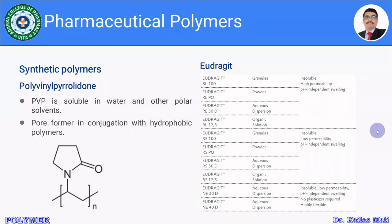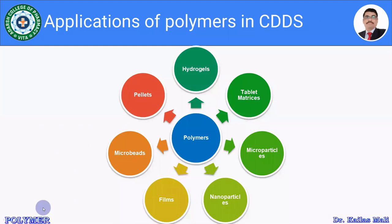Now let us move towards the applications of polymers. Having discussed natural, semi-synthetic, and synthetic polymers and their properties, we can now see how these polymers are utilized for designing controlled drug delivery systems and various dosage forms.